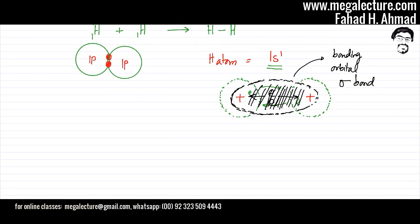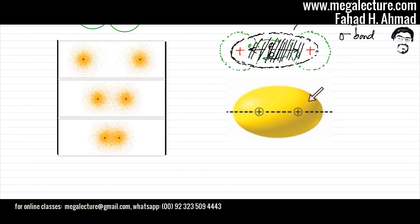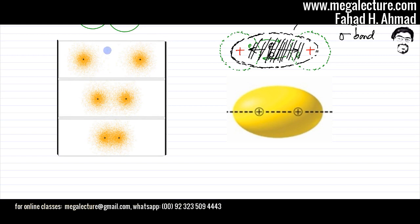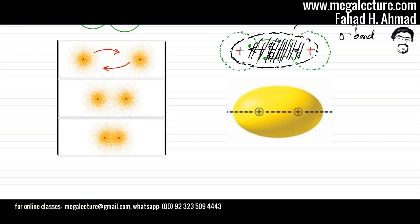Here is a neater version of an S+S overlap. This is the high probability area of finding the electrons — the bonding orbital. You had two hydrogen atoms with electrons in a spherical region around each nucleus. They attracted each other's electrons, and the electrons merged in the middle. The electron density is maximum somewhere in the middle, and the new bonding orbital has an oval shape. This is what an S+S overlap looks like.